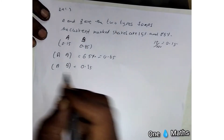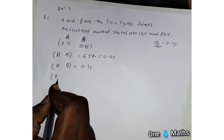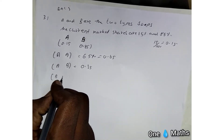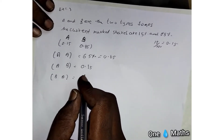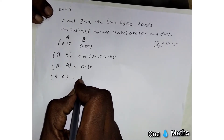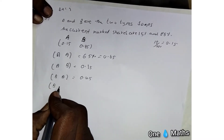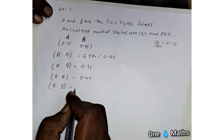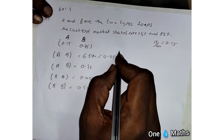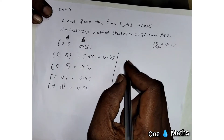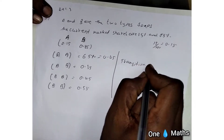For soap B users going to the next purchase: if they switch from soap B to soap A, the percentage is 45 percentage (0.45). If they continue buying soap B again the second time, that percentage is 55 percentage (0.55). Using these values, we can form the transition probability matrix.